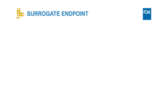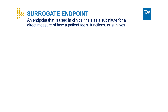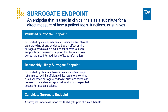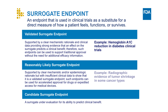Some of these biomarkers can be used as surrogate endpoints in clinical trials based on available evidence. A surrogate endpoint can be defined as an endpoint that's used in clinical trials as a substitute for a direct measure of how a patient feels, functions, or survives. An example of a validated surrogate endpoint is hemoglobin A1c reduction used as a surrogate endpoint in diabetes clinical trials. An example of a reasonably likely surrogate endpoint is radiographic evidence of tumor shrinkage and progression-free survival in certain cancer types to predict an improvement in overall survival.